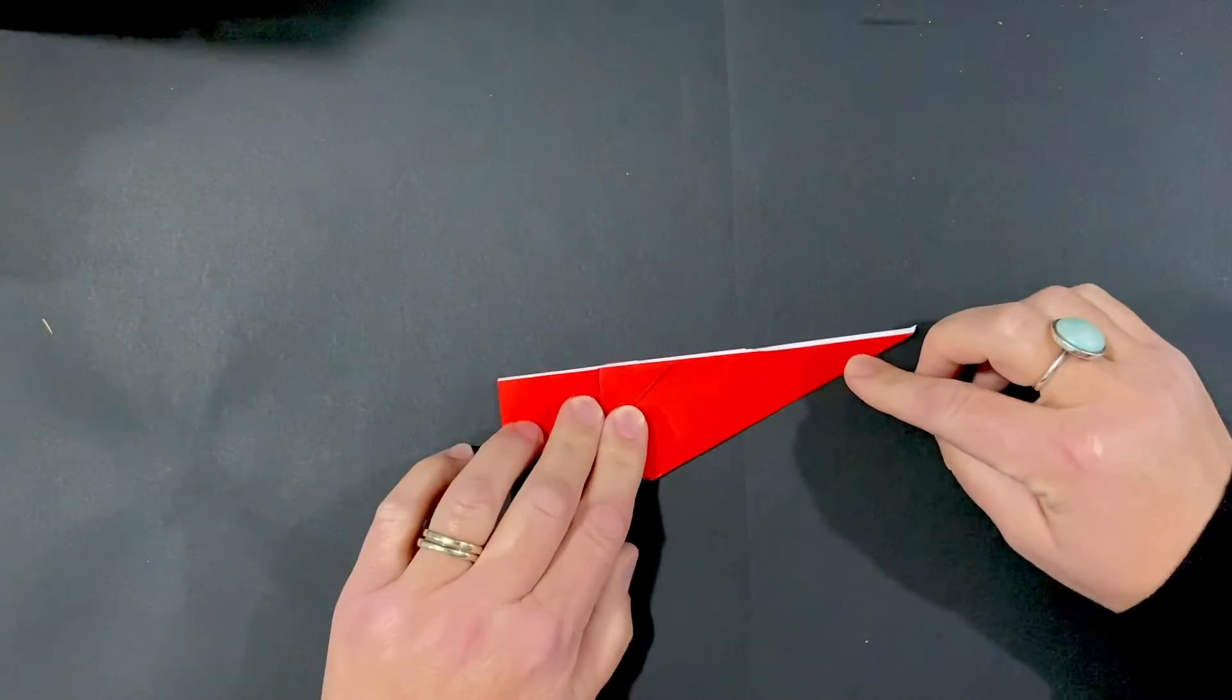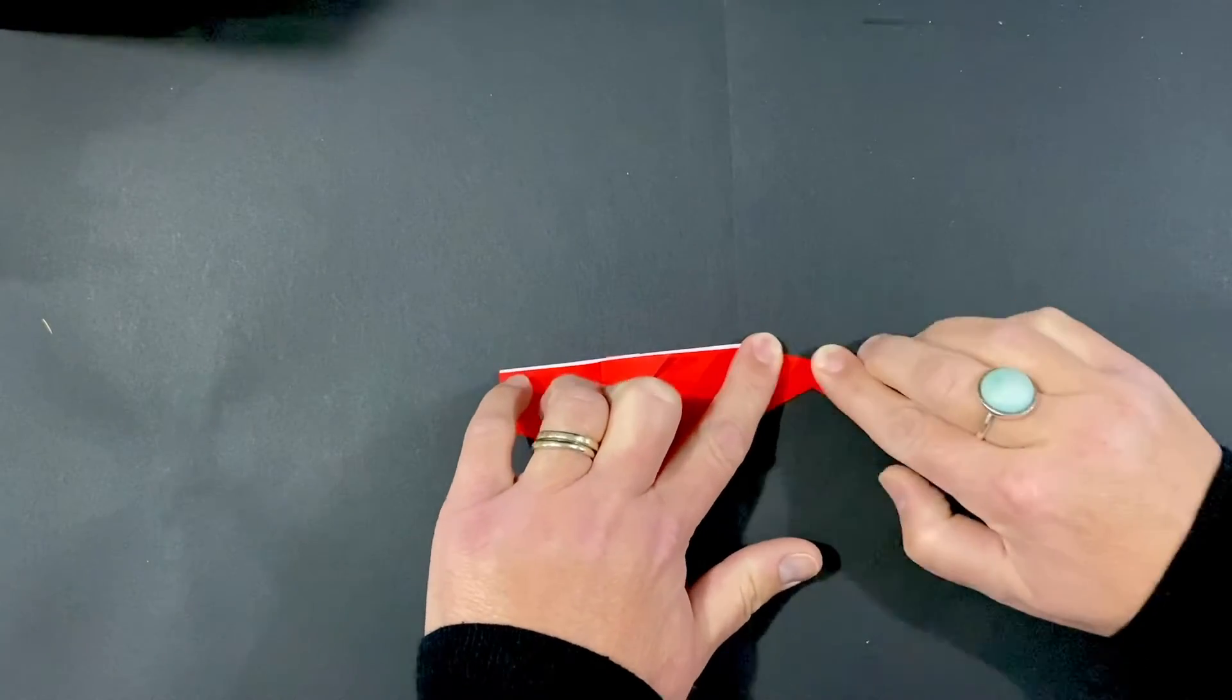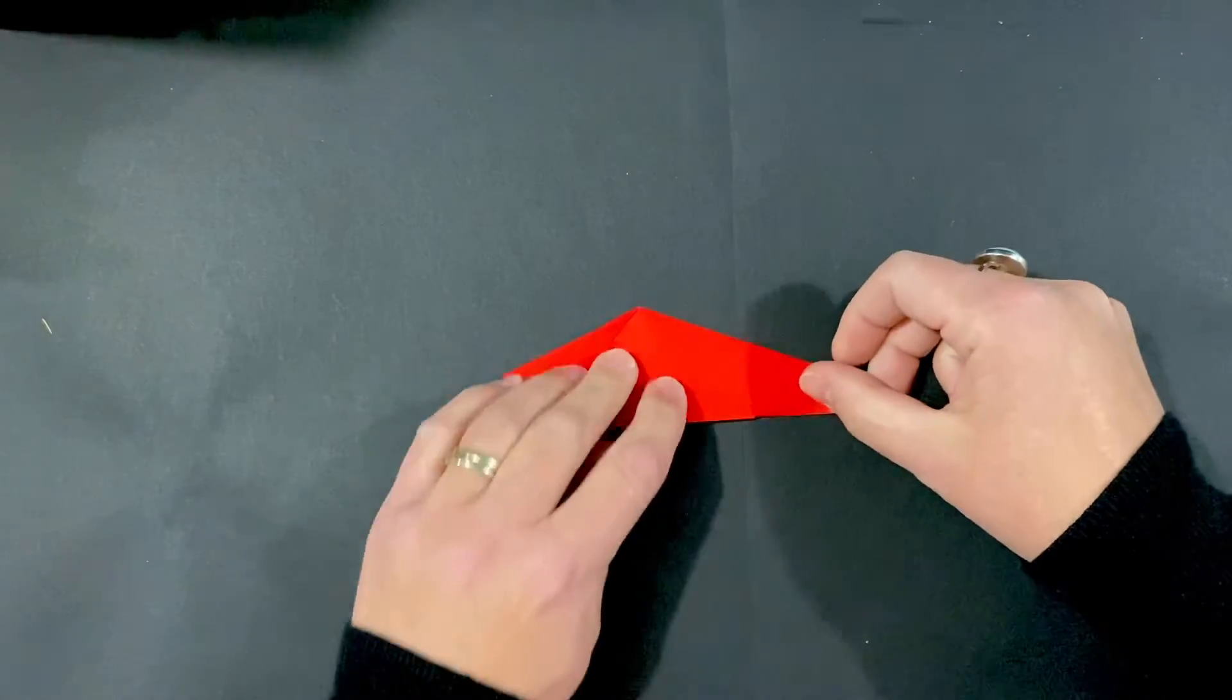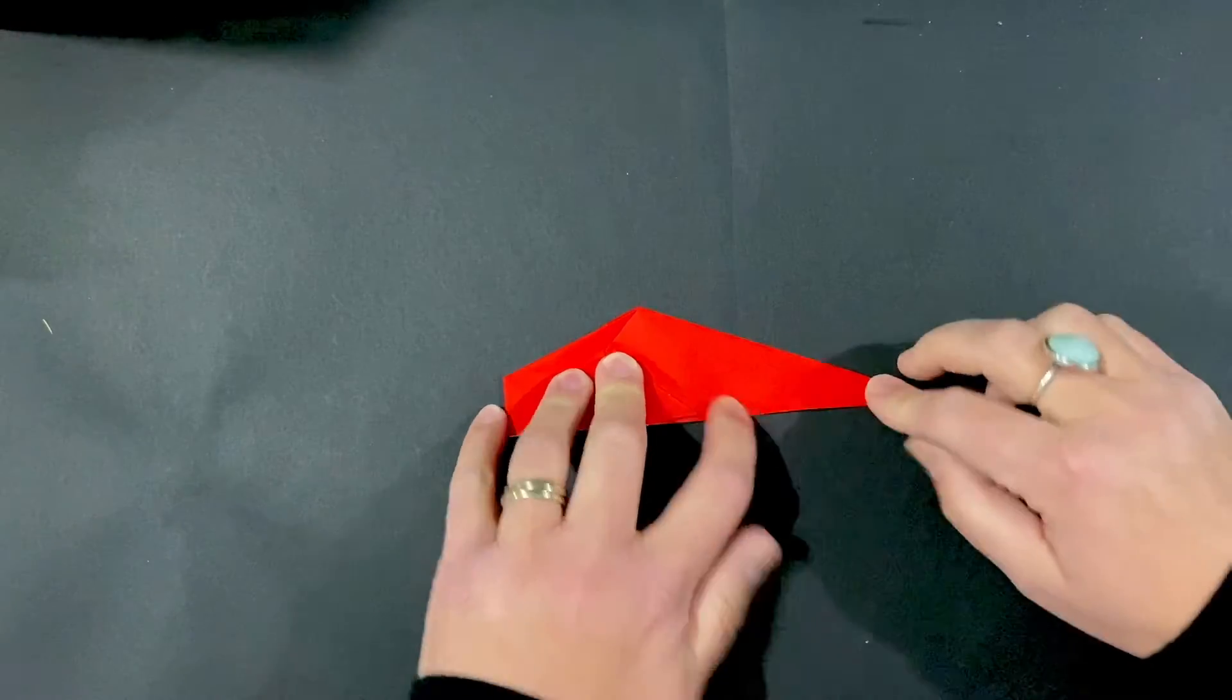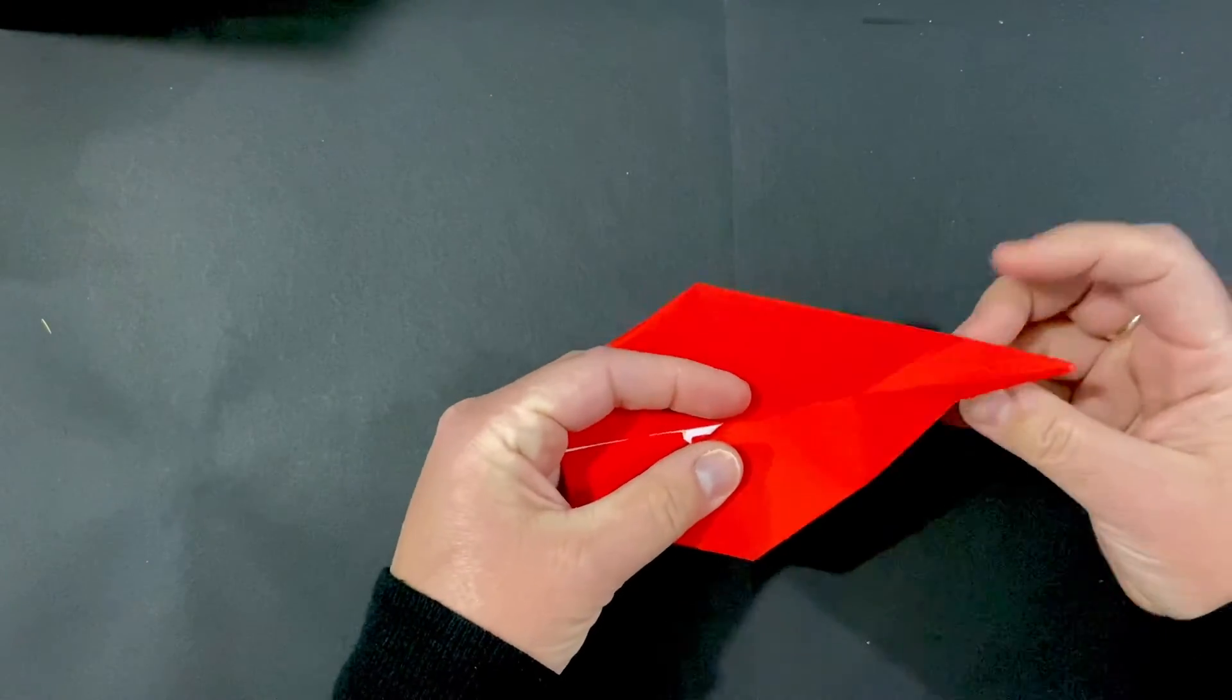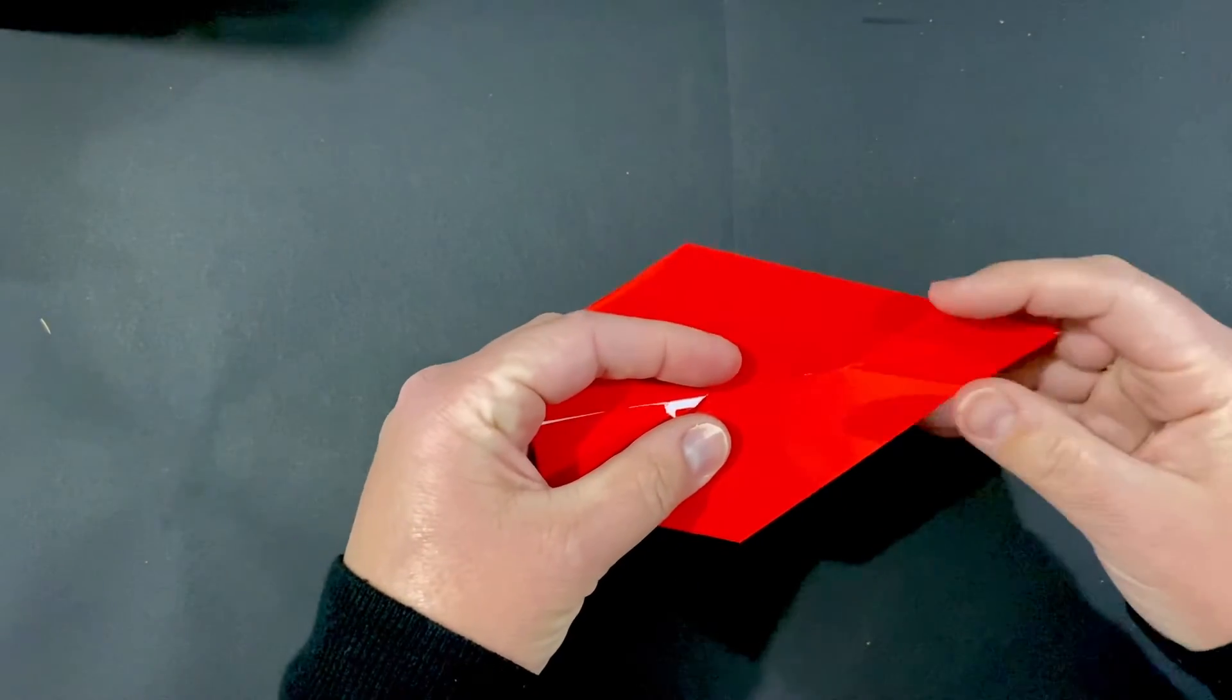Flip it over and give it another crease on that side. Unfold it, flip it over, and one more time a crease. Then we're going to unfold it again and open it up. This is going to push up and you're going to reverse that center fold.